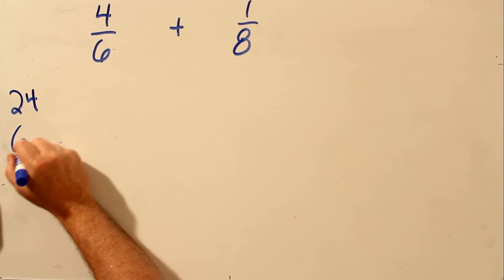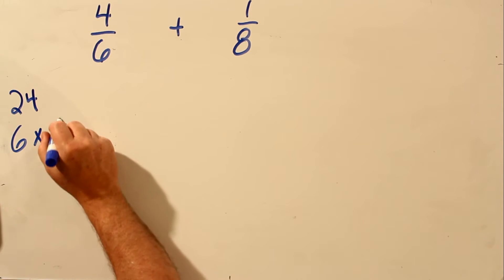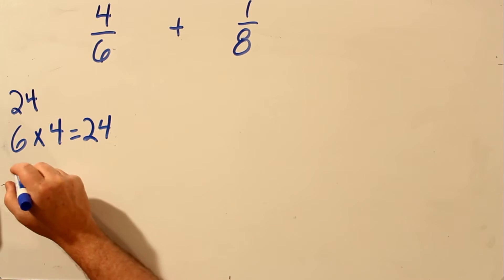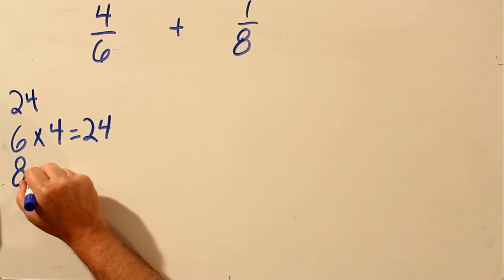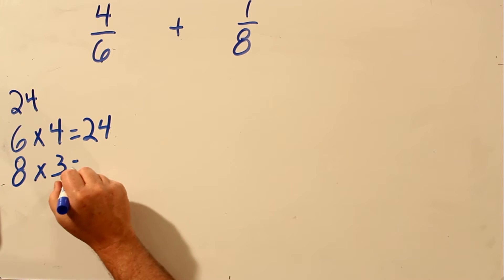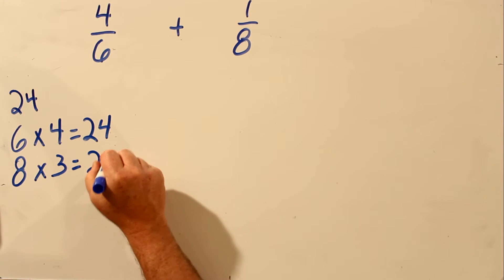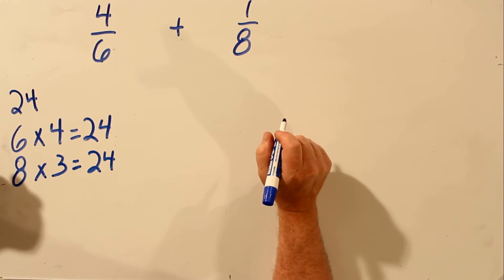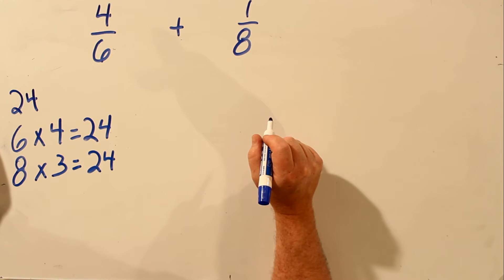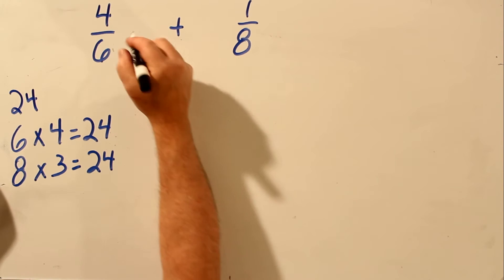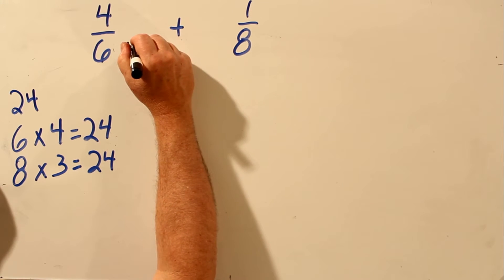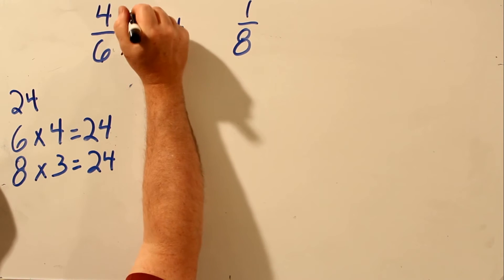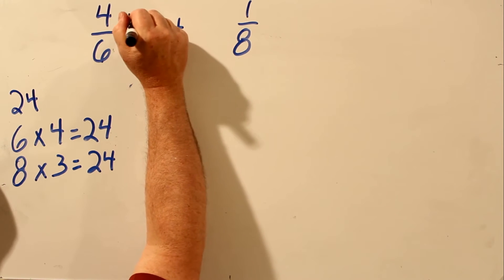6 times 4 is 24, and 8 times 3 is 24. In fact, 24 is the lowest number that both 6 and 8 will go into, and that's why it's called the lowest common multiple. So to make this bottom number 24, you have to multiply by 4. And if you multiply the bottom number by 4, you have to multiply the top number by 4.